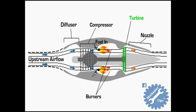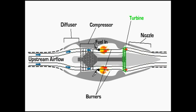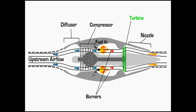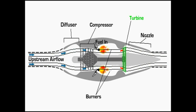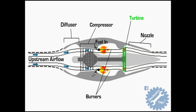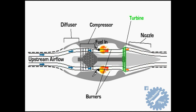The next part is the turbine. After the burner, the hot pressurized air is forced through a turbine. The turbine is basically a specially designed windmill that extracts energy from the air in order to power the compressor. The compressor and turbine are connected by a shaft, so as air is forced through the turbine causing it to turn, the compressor is turned as well.